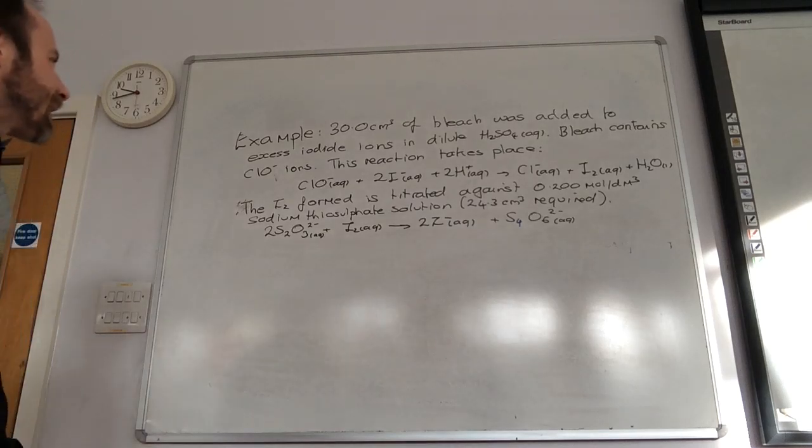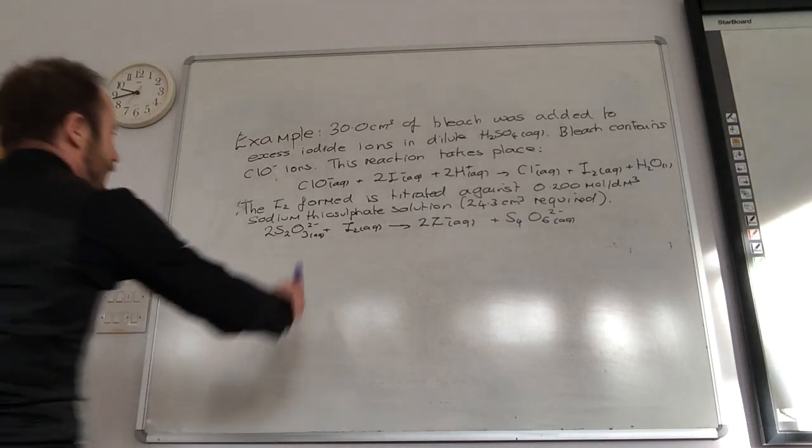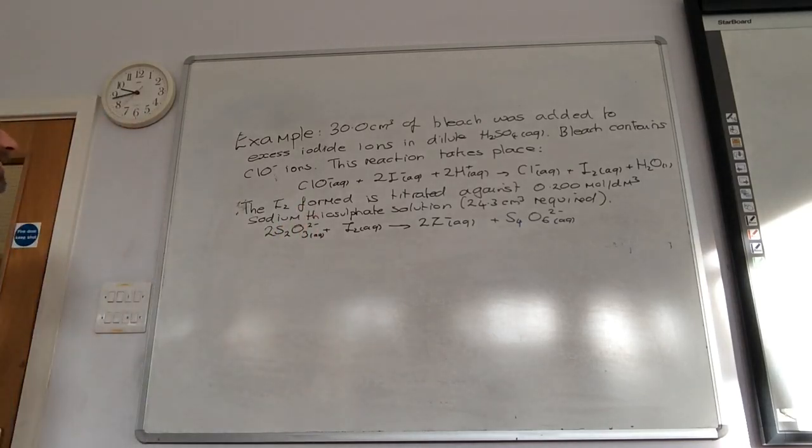So this is a typical-ish example. 30 centimeters of bleach, which we know is this guy, was added to excess iodine ions in dilute sulfuric acid.